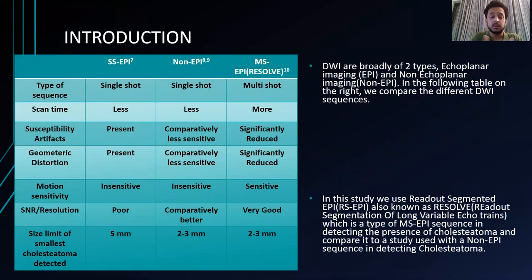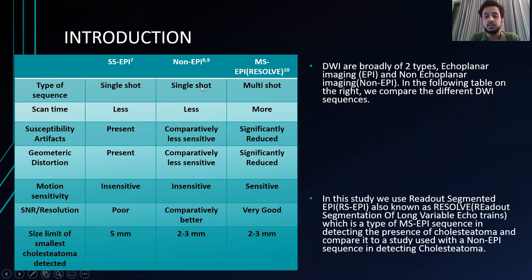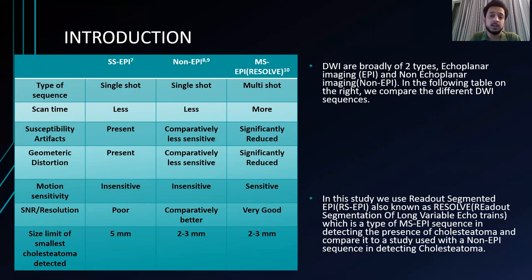The types of DWI are single-shot EPI, non-EPI, and the one we are using, which is multi-shot EPI, that is RESOLVE. Single-shot EPI uses a single shot of DWI applied. Non-EPI also uses single shot; however, multi-shot uses multiple shots. Because of multi-shot, the scan time is more and it is sensitive to motion artifact. However, the resolution is very good and it can differentiate cholesteatomas of two to three mm size. Multi-shot EPI is an enhancement and better version of single-shot EPI.